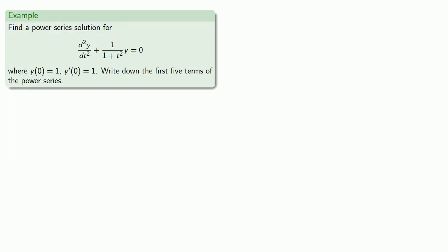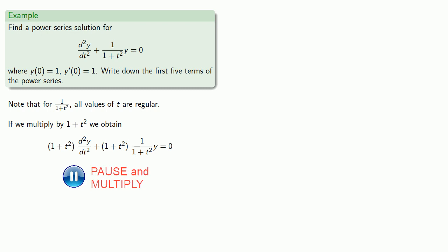First, we note that for 1 over 1 plus t squared, all values of t are regular. And so we'll get convergence for all values of t. Now if we multiply by 1 plus t squared, we obtain the differential equation.